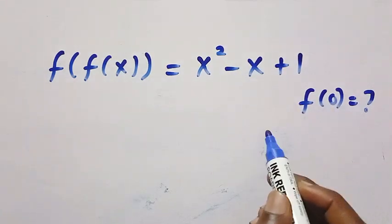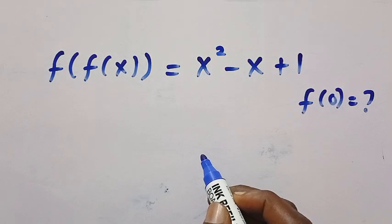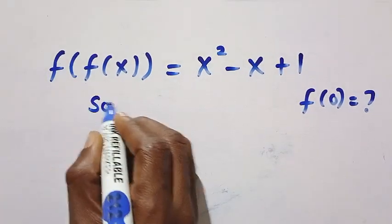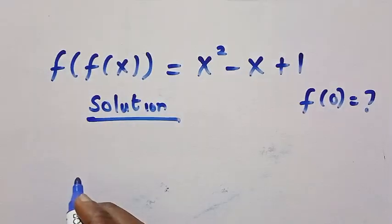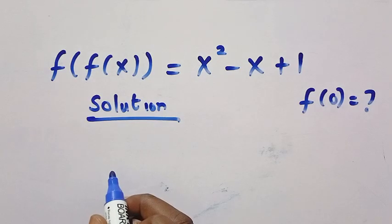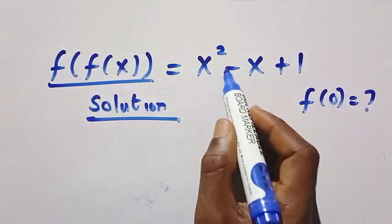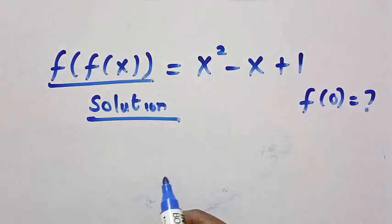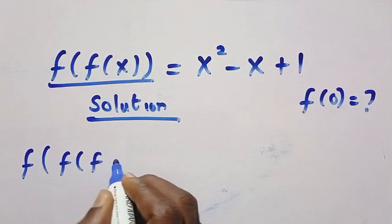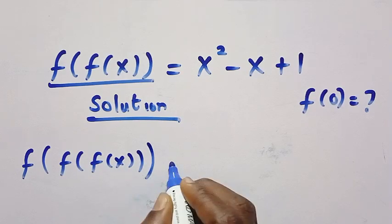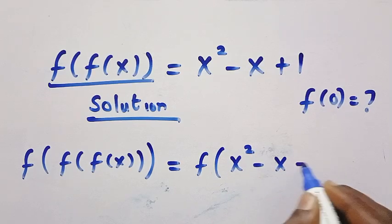How can we get f of 0? This looks complex, but we are going to be solving this step by step. If we consider the solutions from the given equation, we have f of f of x. Suppose I introduce another f applied to the whole of f of f of x — it gives us f of x squared minus x plus 1.